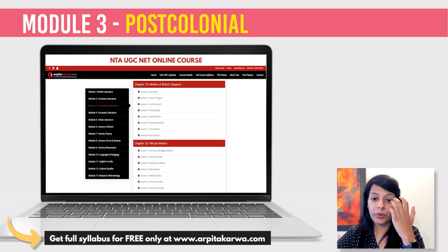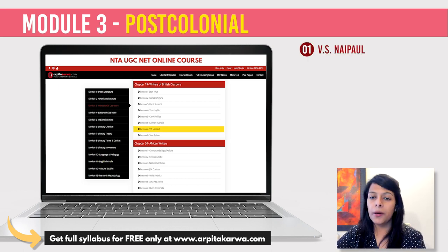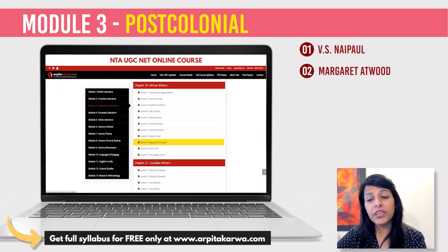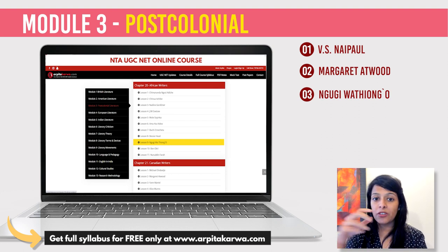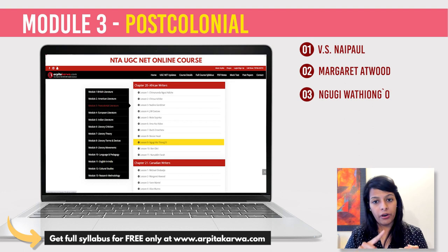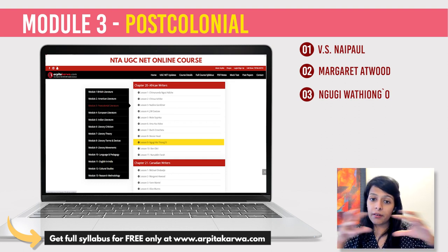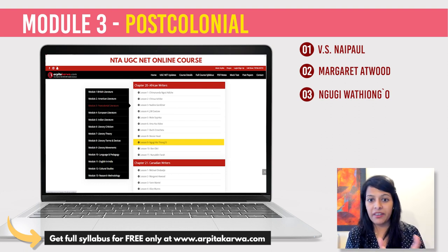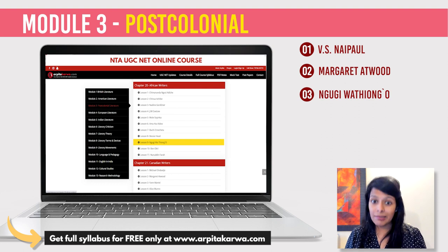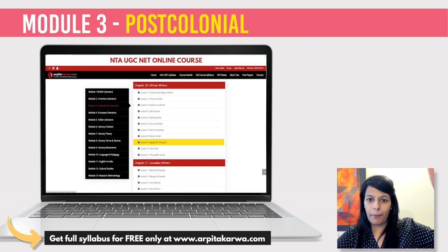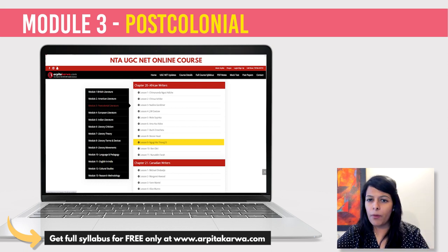Moving forward to Module 3, Postcolonial Literature. A chronology-based question came from V.S. Naipaul, a question from Margaret Atwood, and a question from Ngugi wa Thiong'o on his work on literature. So Postcolonial has been covered. Every time I tell students you have to cover all poets, dramatists, fictional and non-fictional writers from every country — Module 1 British, Module 2 American, Module 3 Postcolonial, Module 4 European, Module 5 Indian. Rather than going by all dramatists together, it is better to read all the writers of one particular age or country so you understand how they influenced each other.